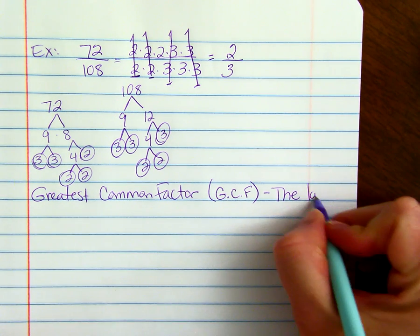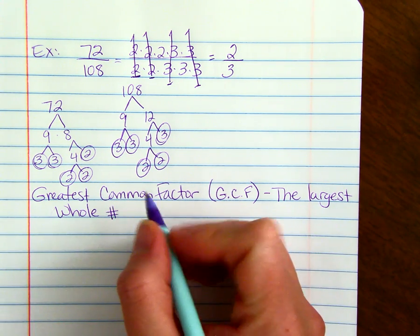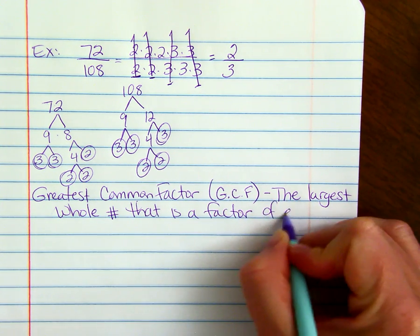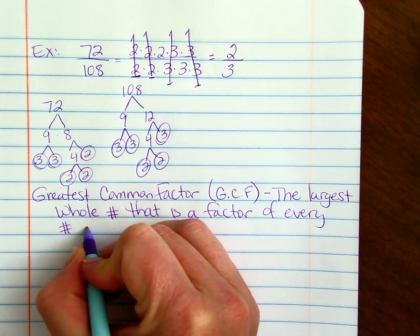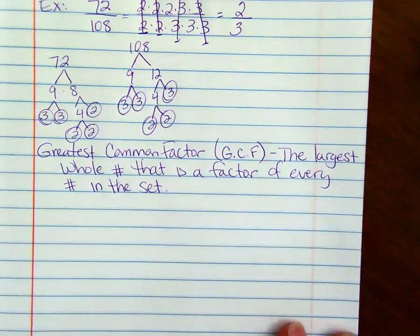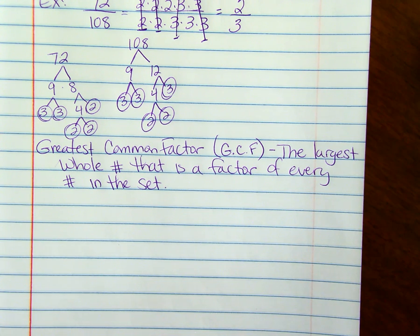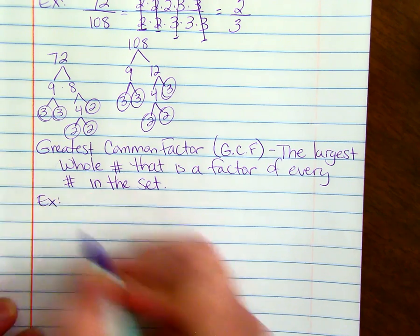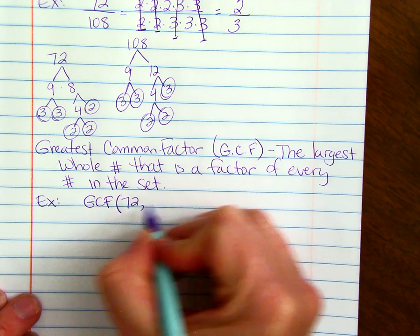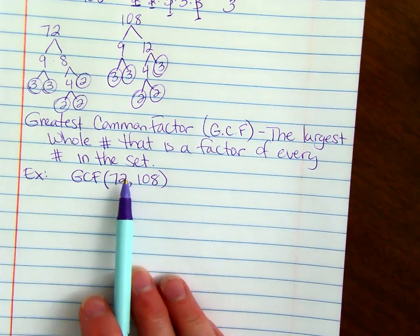Yes, the largest whole number that is a factor of every number in the set. These would not necessarily have to be prime. They could be composite. So let's do an example, finding greatest common factor. We want to find the greatest common factor of 72 and 108. And this is how we would write the problem. Find the greatest common factor of 72 and 108.